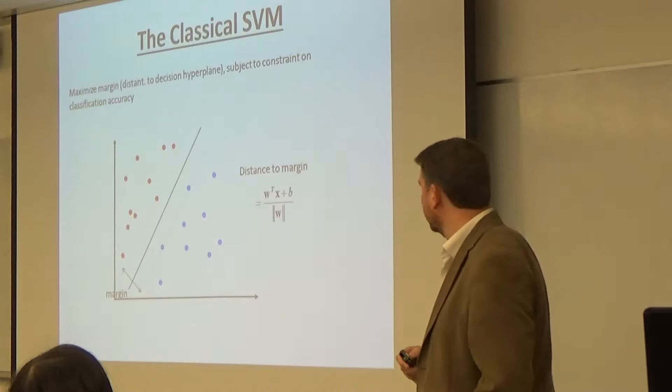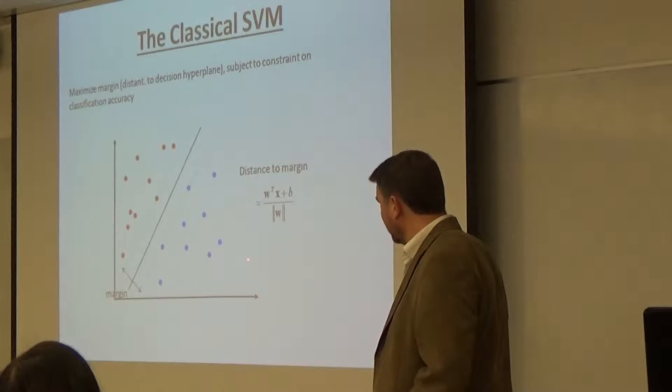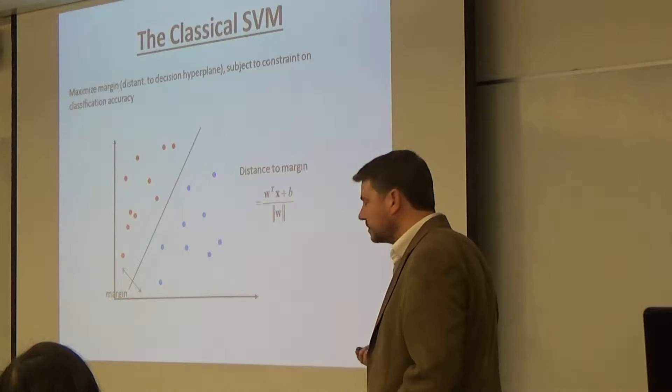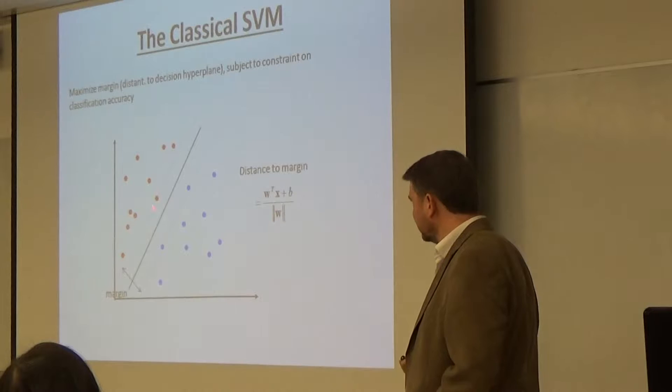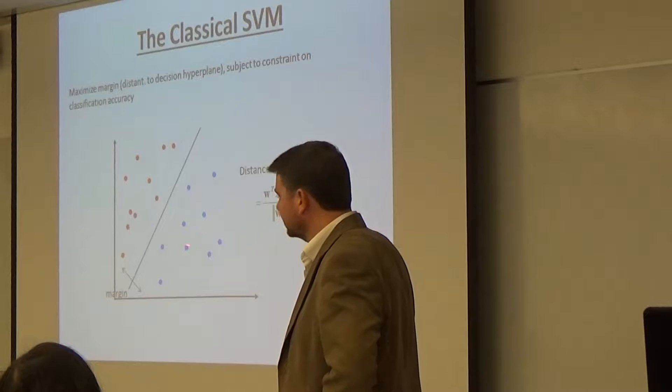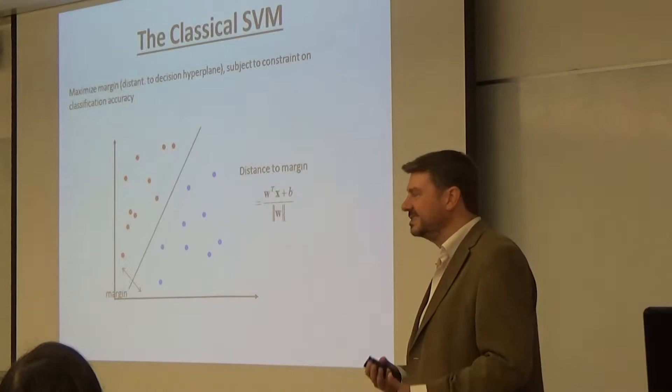To begin at the beginning: the classical support vector machine, given a set of labelled vectors — labelled red and blue — seeks to find an optimal decision hyperplane. It's not always the case that this needs to be a hyperplane; it can be an arbitrary boundary. Basically you want to select the best generalizing hyperplane in the feature space, and it does this by maximizing the margin — the distance from the hyperplane to the opposing labelled objects. Maximizing the margin selects a unique hyperplane.